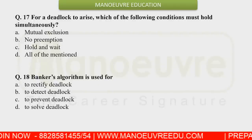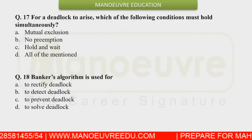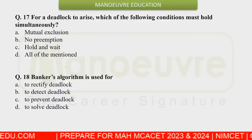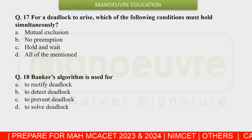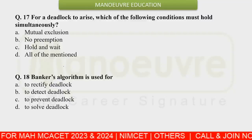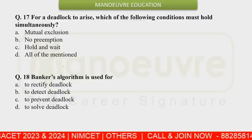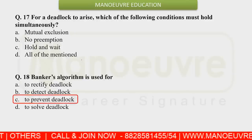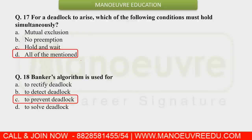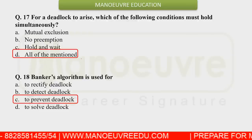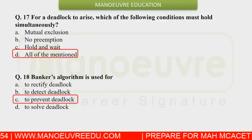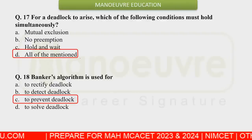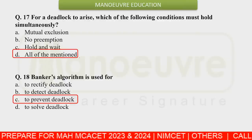The Banker's Algorithm is utilized to prevent deadlocks in operating systems. When a deadlock situation appears, the Banker's Algorithm is used to stop it. The right answer is 'to prevent deadlocks.' There were also questions about the different conditions required for a deadlock to happen — all the conditions mentioned in the options are required simultaneously for a deadlock to occur.